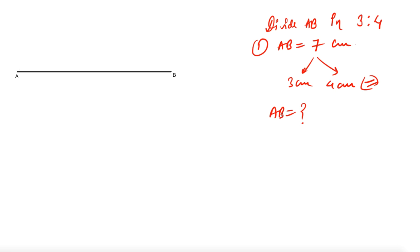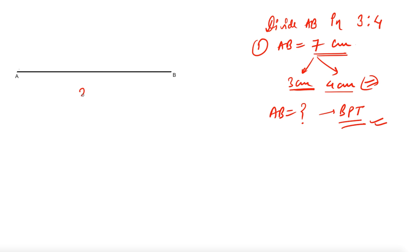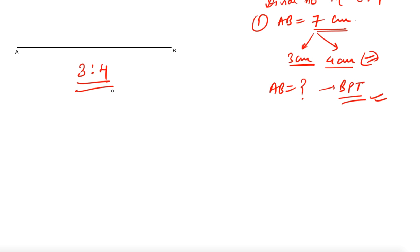But suppose the length of AB was not given — if you don't know the length of AB, how will you divide the line segment? In that case we will use BPT to divide it. In exams they will give you the length, but don't follow that measurement — follow the procedure using the Basic Proportionality Theorem.